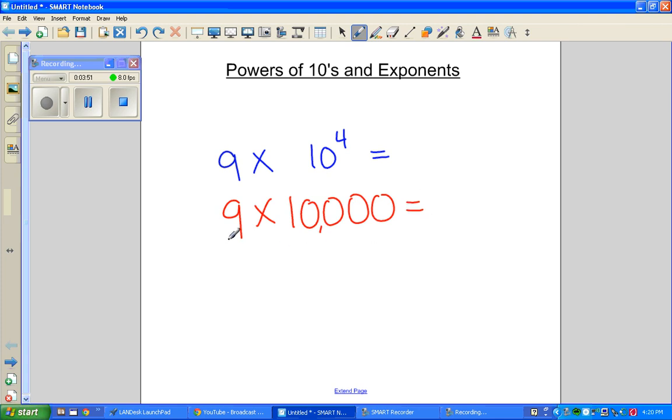9 times 10,000. I know that looks big, but it's actually really easy. 9 times 1 is 9. And then put as many zeros. 1, 2, 3, 4. We have 90,000.